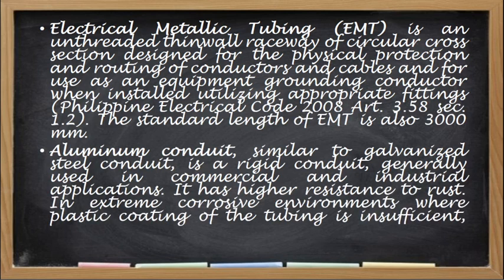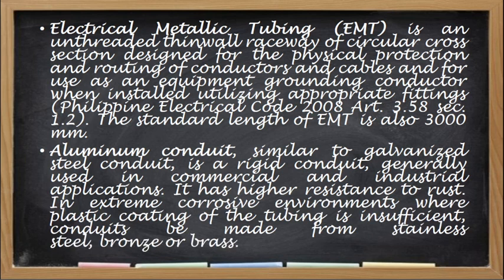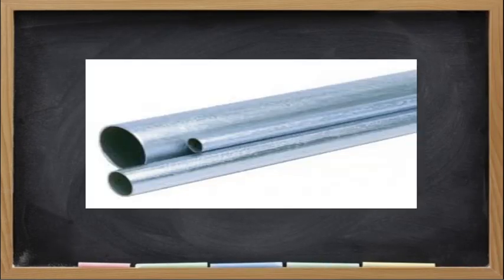Aluminum conduit is similar to galvanized steel conduit — a rigid conduit generally used in commercial and industrial applications. It has a high resistance to rust in extreme corrosive environments where plastic coating of the tubing is insufficient, and can be made from stainless steel, bronze, or brass. The EMT, also known as aluminum conduit, is an unthreaded thin wall, meaning it cannot be threaded, so its coupling comes in a screw type. This is a photo of an Electrical Metallic Tubing or EMT.